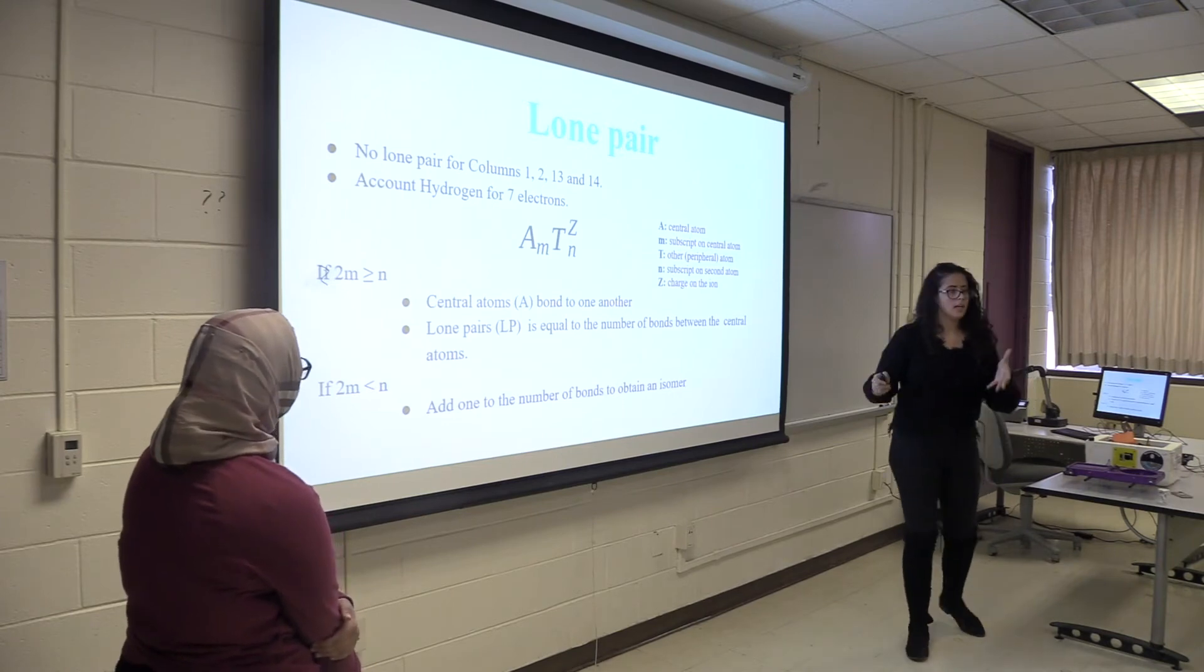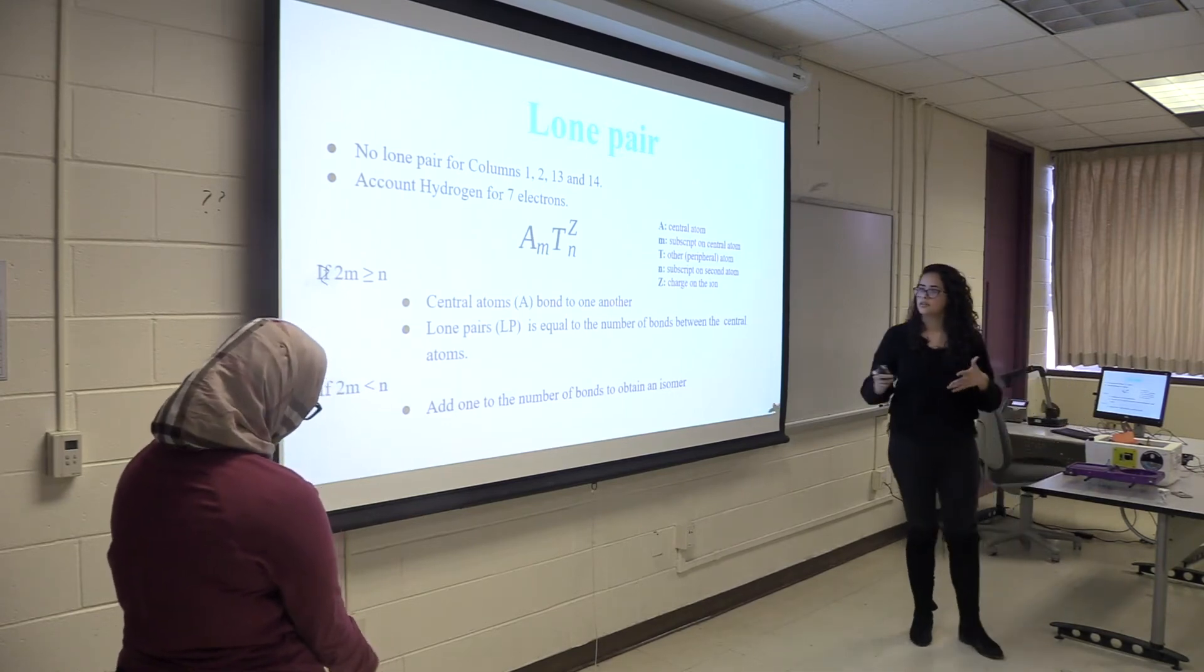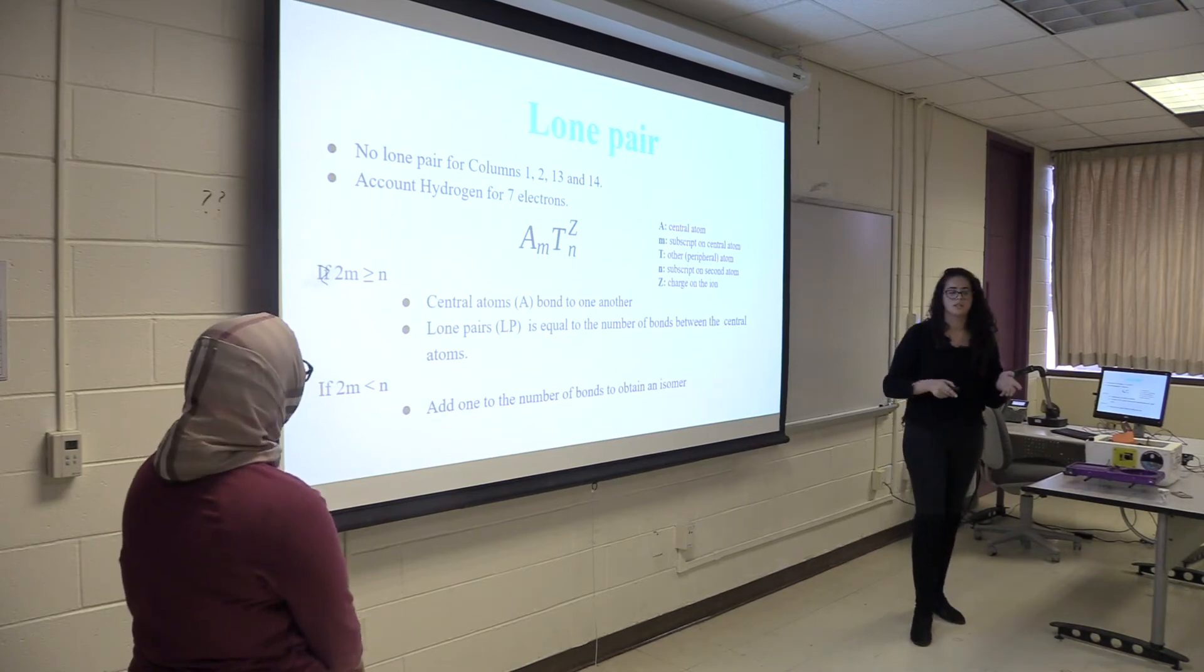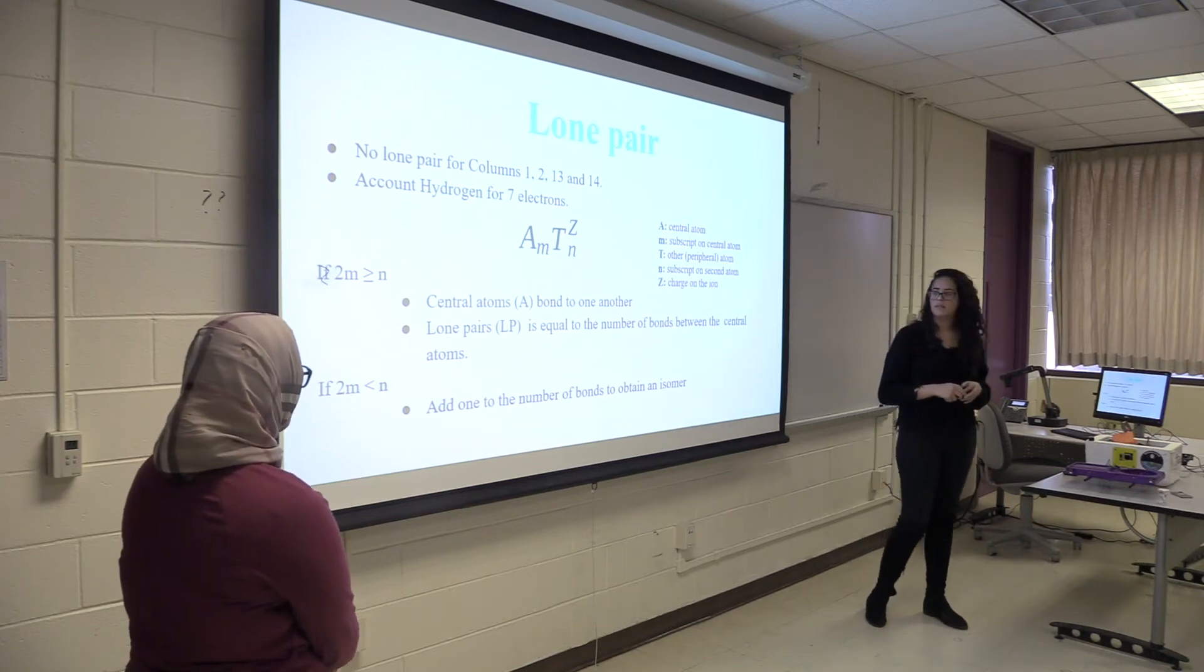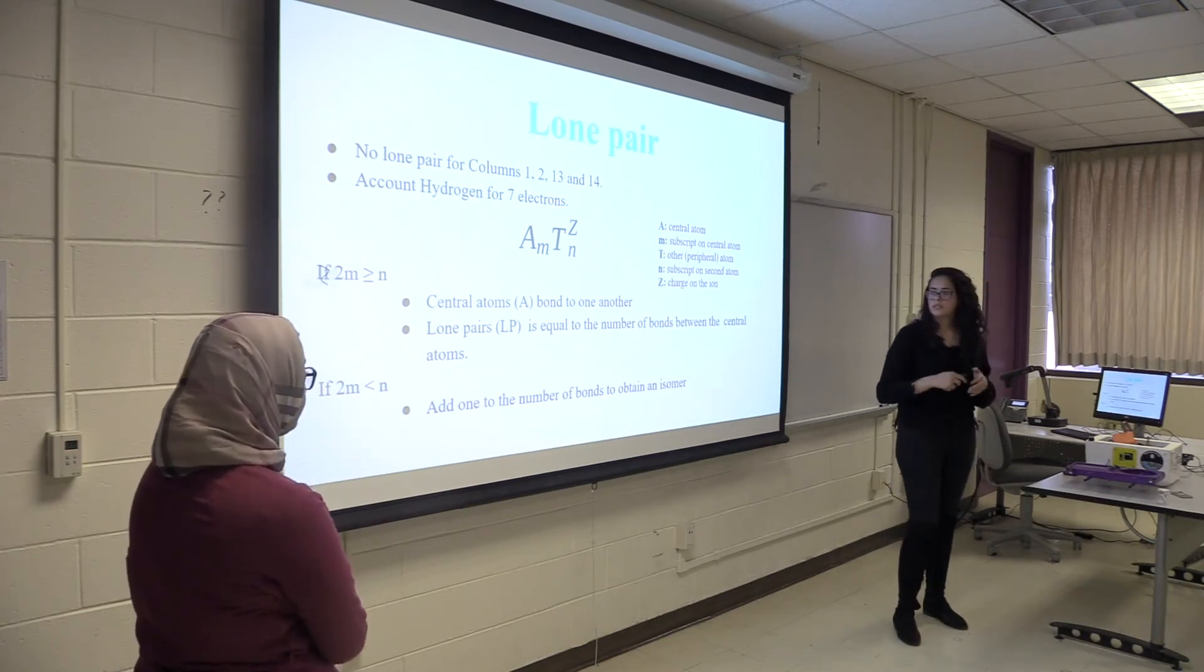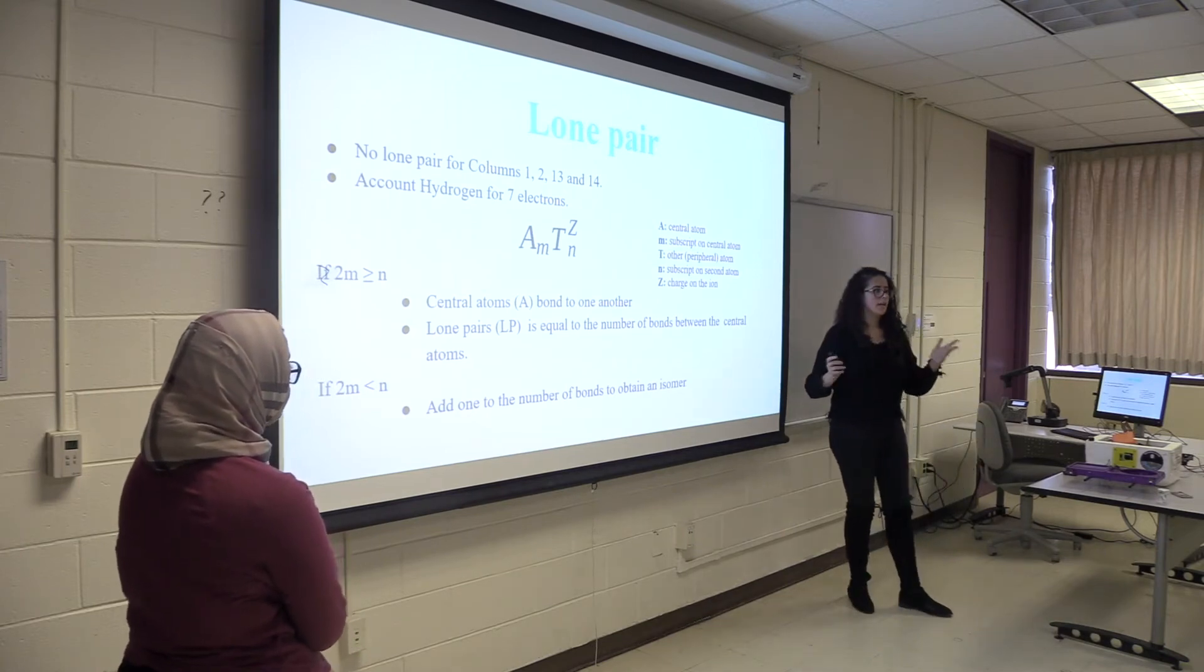So you have two different cases. If 2m is greater than or equal than n, central atoms bond to one another. And the lone pairs is equal to the number of bonds between the central atom. And if 2m is less than n, you add one, the number of the bonds to obtain an ion.